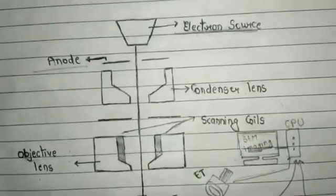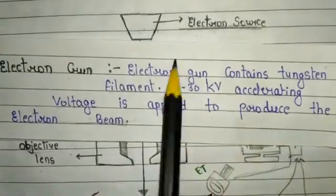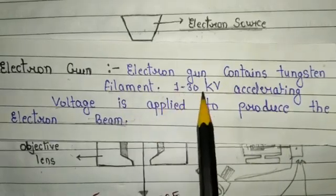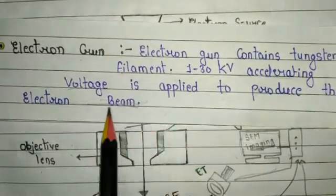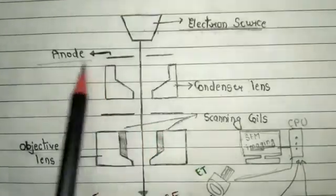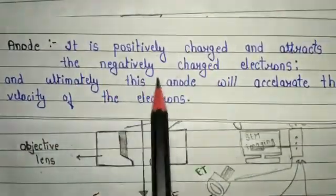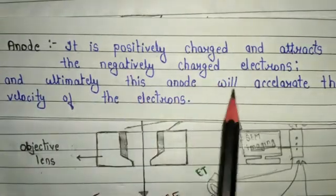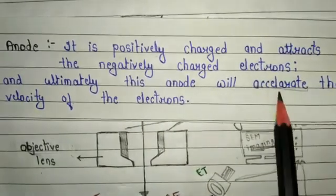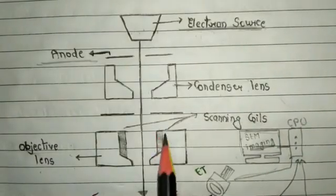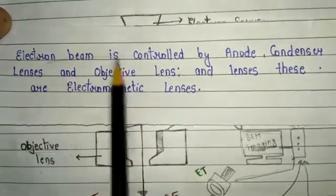For the electron source, we use an electron gun. The electron gun contains a tungsten filament, and an accelerating voltage of 1 to 30 kilowatts is applied to produce the electron beam. The anode is positively charged and attracts the negatively charged electrons, ultimately accelerating the velocity of the electron beam. The main work of the anode is to accelerate the electron beam, and importantly the electron beam is controlled by the anode.